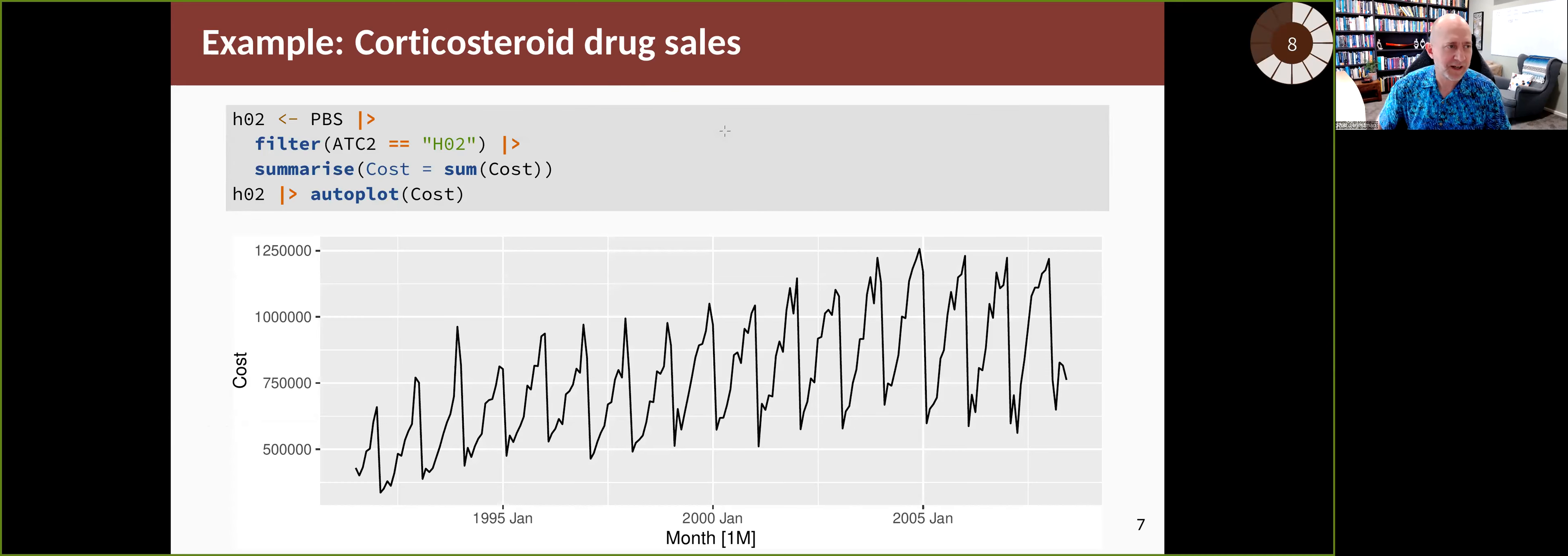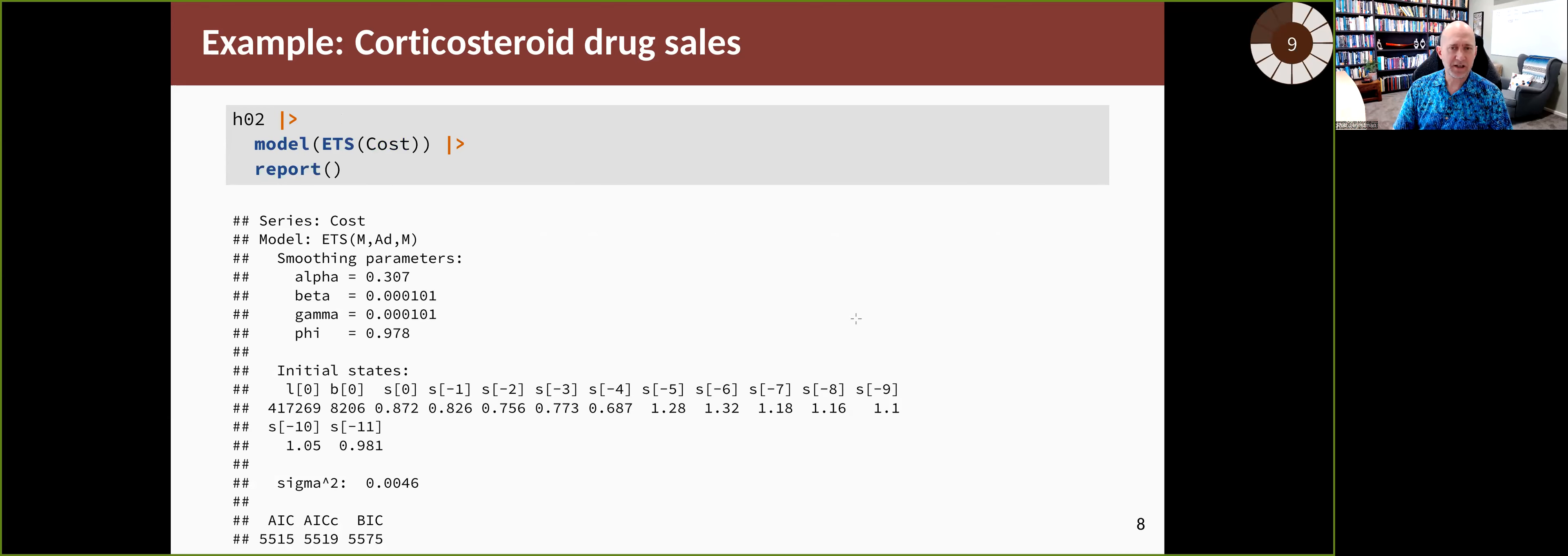Let's do an example. This is corticosteroid drug sales in Australia from the Pharmaceutical Benefits Scheme, the PBS data set. Corticosteroid drugs are the H02 category, so we filter ATC2 equals H02 and sum over the other keys to get a single time series. What we want to do is fit an ETS model to this data set.